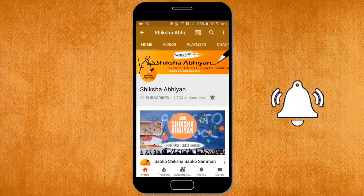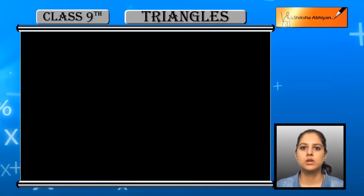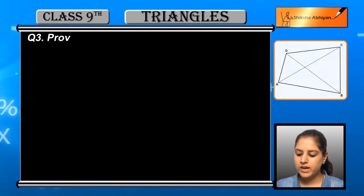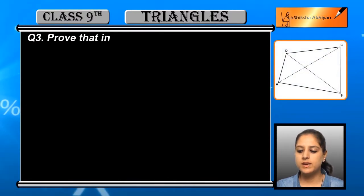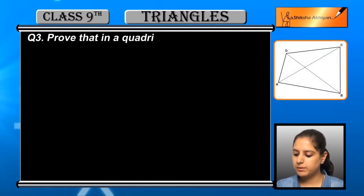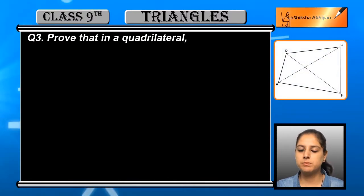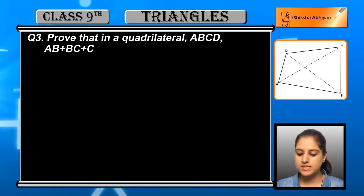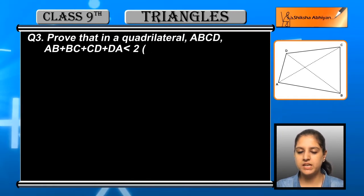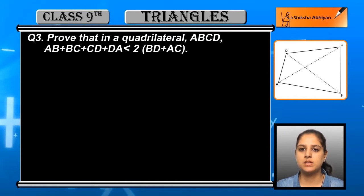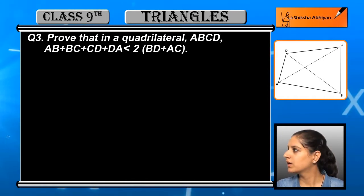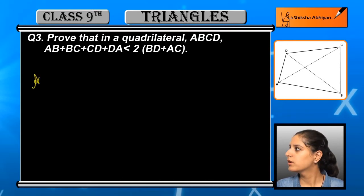The next question is: prove that in a quadrilateral ABCD, AB plus BC plus CD plus DA is less than twice BD plus AC. Let us have a look at the solution.